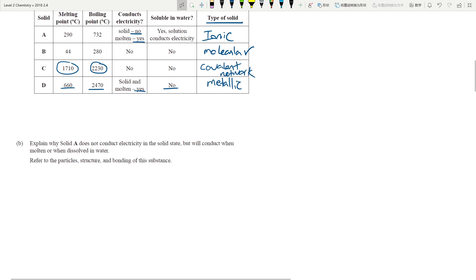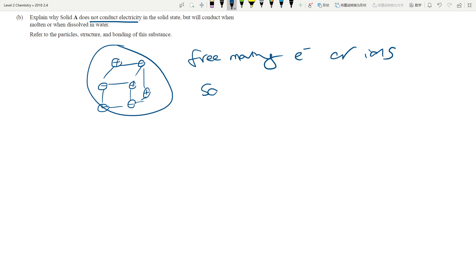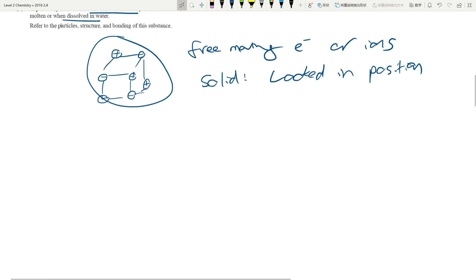Explain why solid A doesn't conduct electricity in solid state but then conducts in molten state. So just re-imagine your ionic solids. You have the positive ions, negative ions surrounding each other in the giant three-dimensional structure and they're all locked in space. So in order to conduct electricity, you need free moving electrons or ions to carry charges.